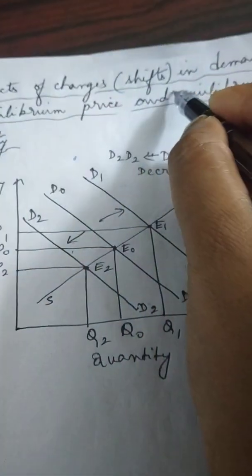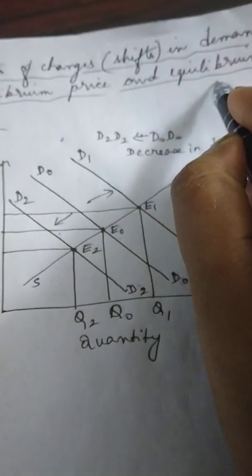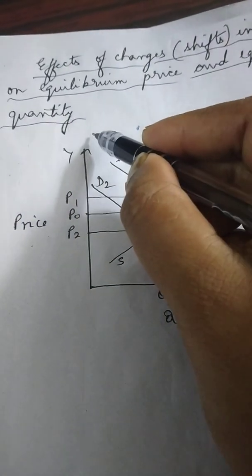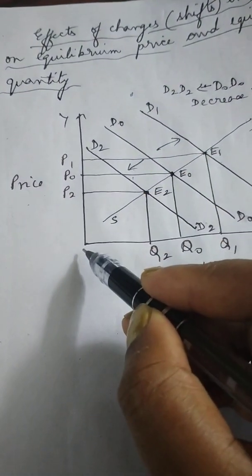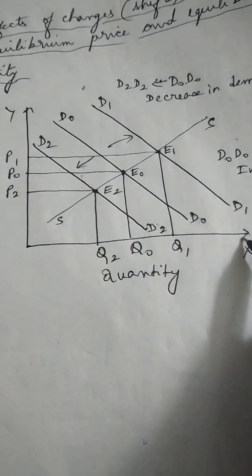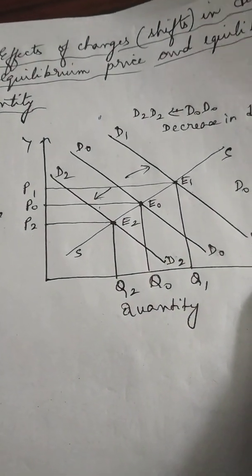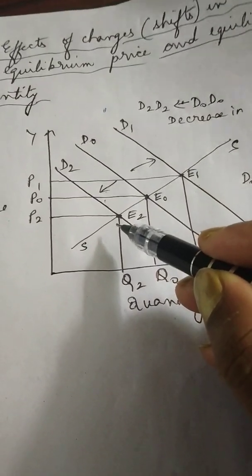Let me now explain the effects of changes in demand on equilibrium price and equilibrium quantity. I have taken price in the y-axis, quantity in the x-axis, and since we are considering only the effect of changes in demand, supply remaining unchanged.